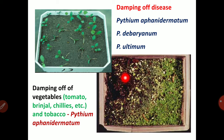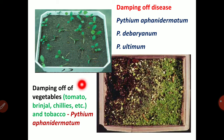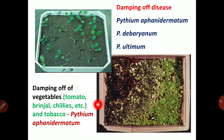Pre-emergence damping off infects the radicle or seed of the plant; it does not germinate. In post-emergence damping off, it infects the collar region. Damping off is a severe disease of vegetables including tomato, brinjal, chillies, tobacco, and others, caused by Pythium aphanidermatum, with other species being debaryanum and ultimum.